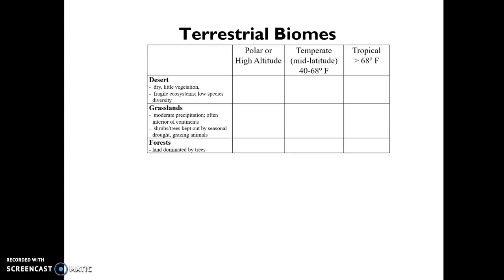In addition to temperature, going downward we have variations in precipitation. Deserts have very little rainfall and therefore very little, very specialized vegetation, fragile ecosystems, and typically low species diversity. Then we have moderate precipitation, which forms grasslands. Grasslands often occur in the interior of continents and are dominated by grasses rather than tall trees or shrubs because of seasonal drought.